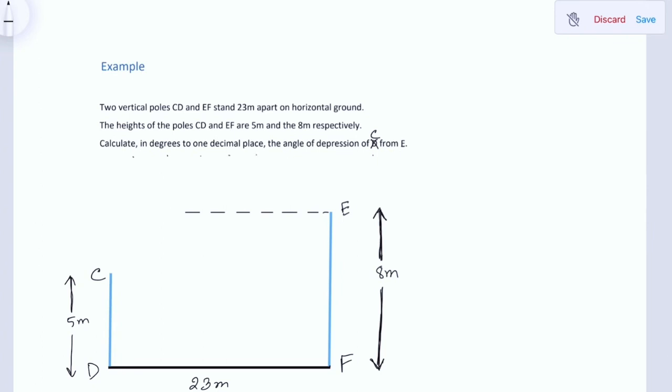Calculate, in degrees to one decimal place, the angle of depression of C from E. From E means the angle will be at point E. So we need to draw the horizontal line at point E.